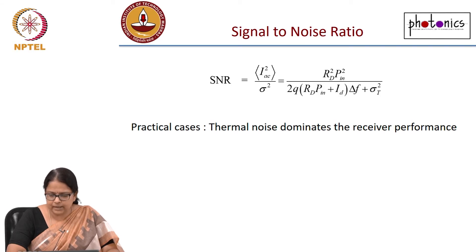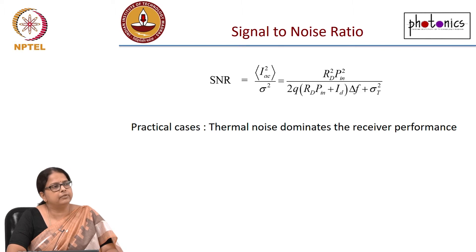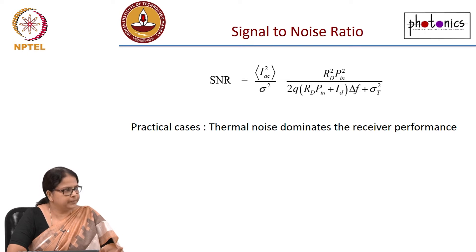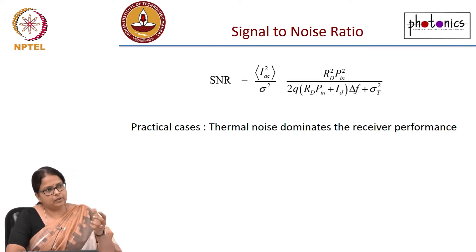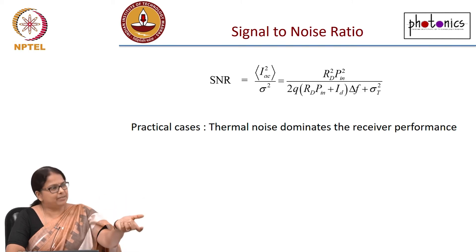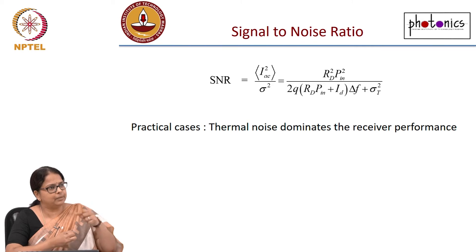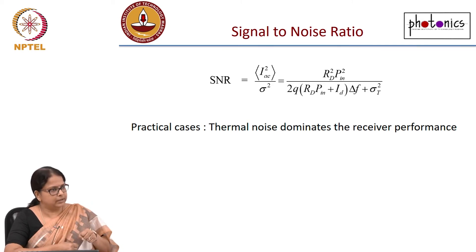If you calculate signal-to-noise ratio, that is ultimately quantifying the total signal power to the noise power. Because if you just calculate the noise, your thermal noise is independent of the power. So you want to have a quantity which is dependent on the signal power — a ratio of signal power to the noise.